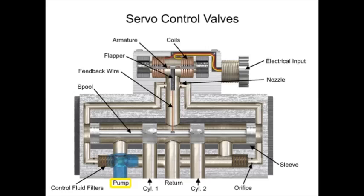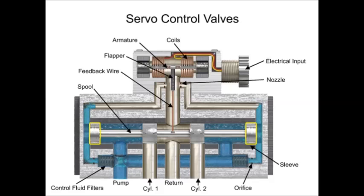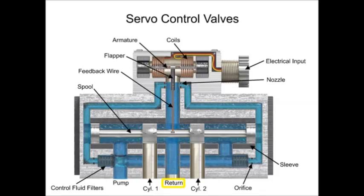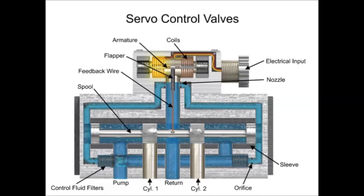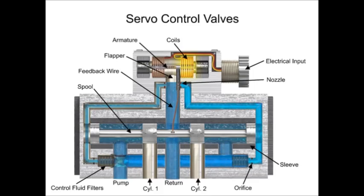Fluid from the pump inlet is tapped off through filter elements, passes through orifices past both ends of the spool, goes on to nozzles, and out to the return line. A feedback wire attached to the flapper terminates in a ball end that sits in a very close-fit slot in the spool. When the torque motor coils receive a current signal, the armature rotates clockwise or counterclockwise and pushes the flapper closer to one nozzle and farther away from the opposite one. This allows pressure to increase at one end of the spool and decrease at the other.